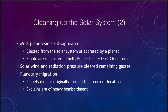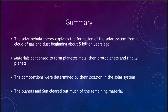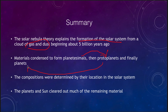Let's finish up with our summary. The solar nebula theory is a way of explaining the formation of the solar system about five billion years ago from a cloud of gas and dust. The materials condensed to form first planetesimals, which accreted together to become protoplanets, which finally became the planets we see today. The compositions were determined by their location in the solar system — rocky and metallic worlds close to the Sun where it was very hot, and icy worlds further away where it was much colder. The planets and the Sun were what cleared out much of the remaining material, whether planetesimals or gas and dust.